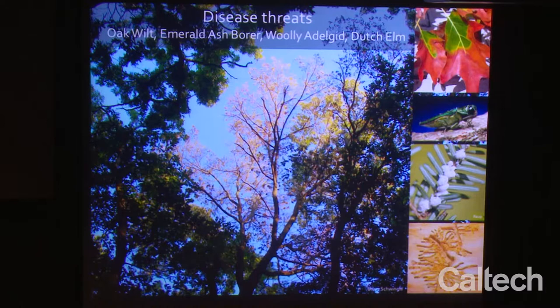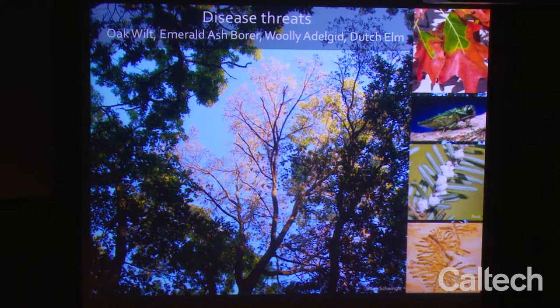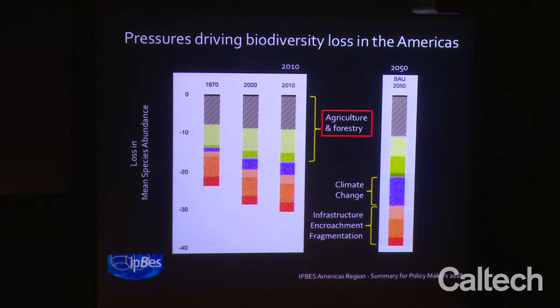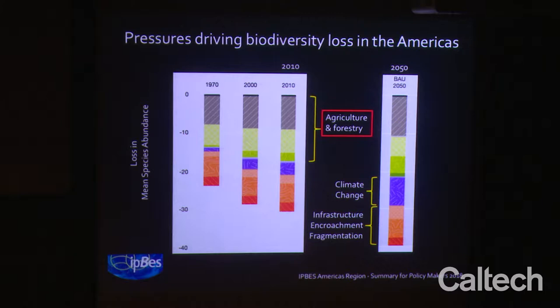The future of climate looks very, very different. If you're from California, you are daily experiencing the increasing fires. If you're in the Midwest like me, you might be appalled at the number of dying trees all around you. The number of disease threats hitting the Midwestern United States is unbelievable — oak wilt, emerald ash borer, the woolly adelgid, Dutch elm — and this is just in North America. Disease threats are increasing.